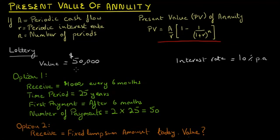Essentially, you're offered two different options to receive the payments. To determine the value of the fixed lump sum amount that will leave us indifferent between the two options, we need to calculate the present value of the annuity offered in option one.